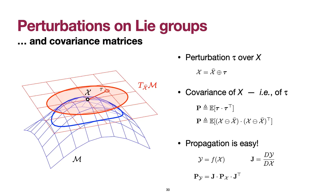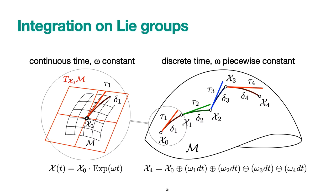Integration is straightforward. In continuous time, for constant velocity, integration is just the exponential. For discrete time, you break the velocity into piecewise-constant trajectories and use the plus operator as many times as needed to build your trajectories.